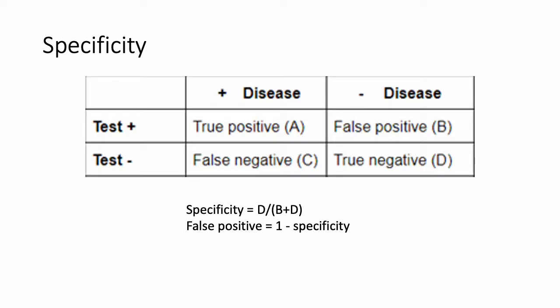Specificity is the percentage of true negatives out of all patients who do not have the disease — in other words, the ability of the test to obtain normal results for a patient who does not have a disease. To calculate this, you divide the number of true negatives out of all the patients who do not have the disease, or false positives plus true negatives — D over B plus D. Similarly, the false positive rate is going to be 1 minus the specificity.